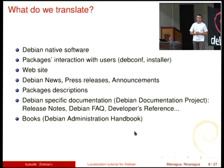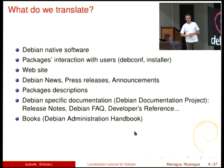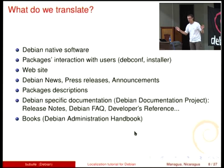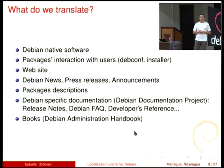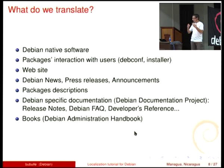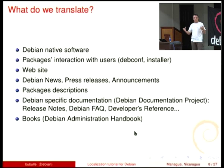Package descriptions are a very important item — all packages have descriptions of one, two, three paragraphs each. I don't know how many packages we have; imagine around 30,000 packages and many, many words. It's a giant work. Also all Debian-specific documentation, such as developer documentation, administration documentation, and things like that.